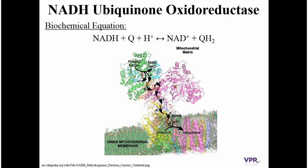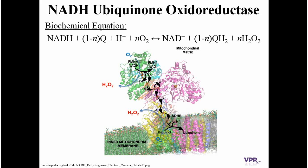We know this enzyme can produce reactive oxygen species, but the precise mechanisms are less clear. We know that the NADH oxidase site and the quinone reductase site are the two most likely sites in the enzyme responsible for reactive oxygen species generation. We can reflect that in the modified biochemical equation where the factor N represents the fraction of electrons — in this case from NADH — that are used to reduce oxygen to form reactive oxygen species. What we don't know is the precise enzyme states or where the electron is on the enzyme that leads to ROS production.